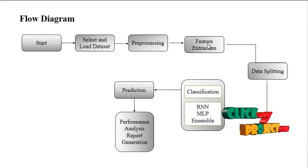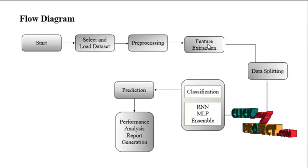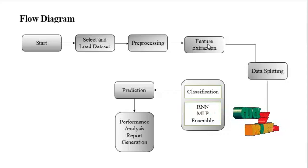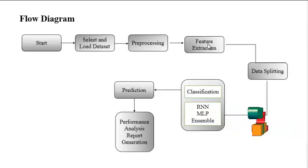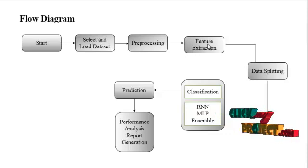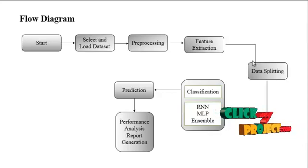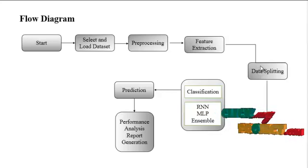Next is feature extraction, which involves extracting the features. For example, our dataset has 25 column features but we want only 20 columns. Using the PCA (Principal Component Analysis) feature extraction algorithm, we select only 20 features. After that is data splitting, where our data is split into training and testing data.